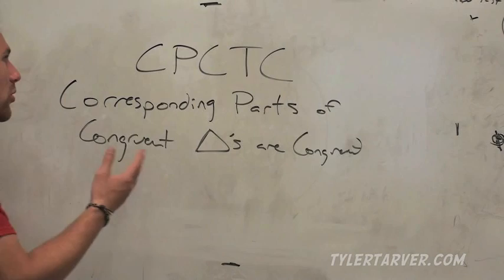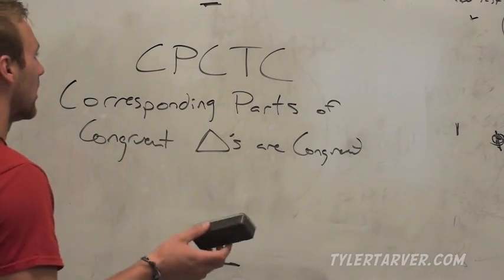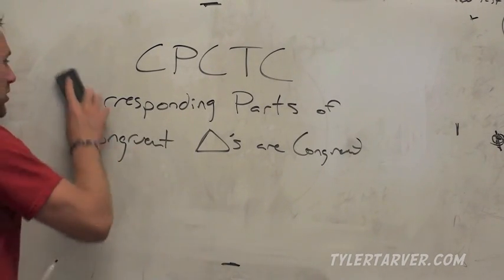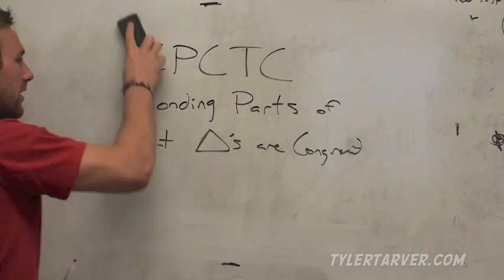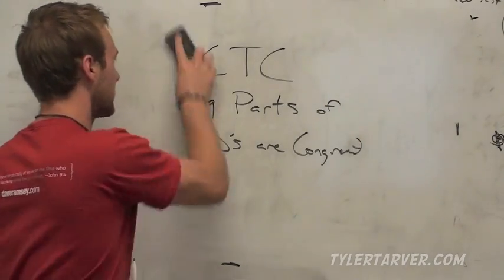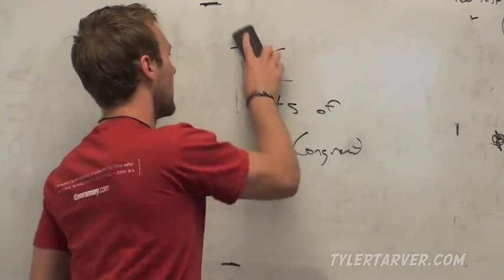So, anyways, corresponding parts of congruent triangles are congruent. So we know there's something that matches up in every triangle that is congruent.